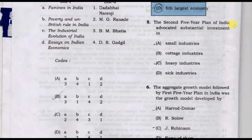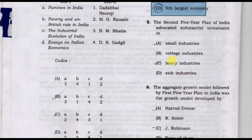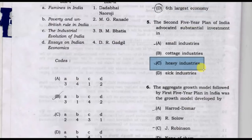The second five-year plan of India advocated substantial investment in small industries, cottage industries, heavy industries, and sick industries. Option C, heavy industries, is the correct answer.